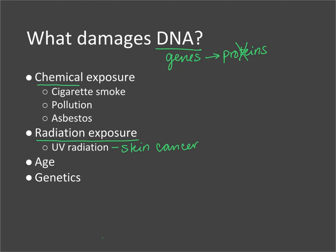Age is also a factor. As you get older, your DNA is replicating more and more. The more times DNA is replicated, the more likely you are to build up mutations. That's why your chances of getting cancer increase as you get older. Cancer can also be due to inherited genetics — you can inherit an already-damaged gene from your parents, making you more susceptible to cancer.